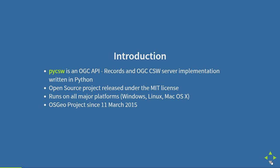PyCSW is an OGC API Records and an OGC CSW server implementation written in Python. It was originally a long-time CSW server implementation, but with the emergence of the OGC API standards we've also naturally implemented OGC API Records. It's an open source project, runs on all platforms, and we became an OSGeo project in 2015.